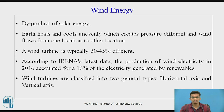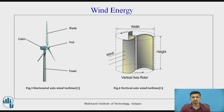Wind turbines are classified into two general types: horizontal axis and vertical axis wind turbines. The horizontal axis wind turbine is the most commonly used design configuration, where the rotating axis of the blades is parallel to the wind stream. The vertical axis wind turbine is probably the oldest type of windmill, in which the axis of the drive shaft is perpendicular to the ground. In western countries, vertical turbines have been installed along roads so that wind from moving vehicles rotates the blades and produces electricity.